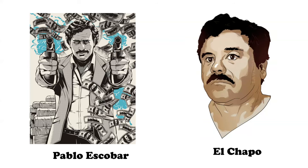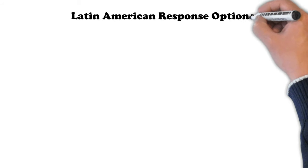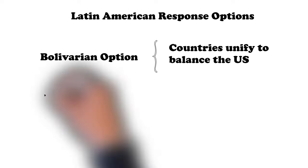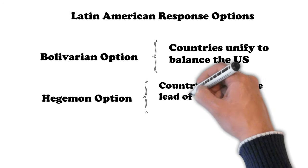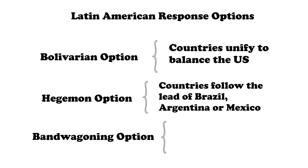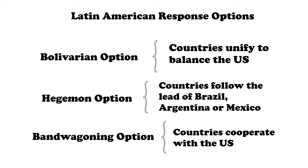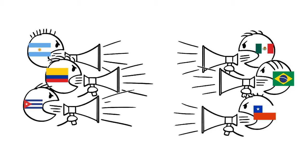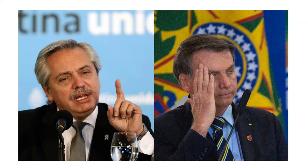Given the power disparity that has always existed between Latin America and the United States, the region has had few options in how to respond. These are the Bolivarian option — countries unifying to limit American aggression; the hegemon option — where countries follow the lead of a larger nation like Mexico, Brazil, or Argentina; and the bandwagoning option — where countries cooperate to limit potential detrimental actions. Historically, most countries have coalesced around the third option. The Bolivarian option has often failed because interests tend to be disparate, while the hegemon option has failed because Mexico is too close and Argentina too far, and distrust of Brazil has often limited its potential leadership role.